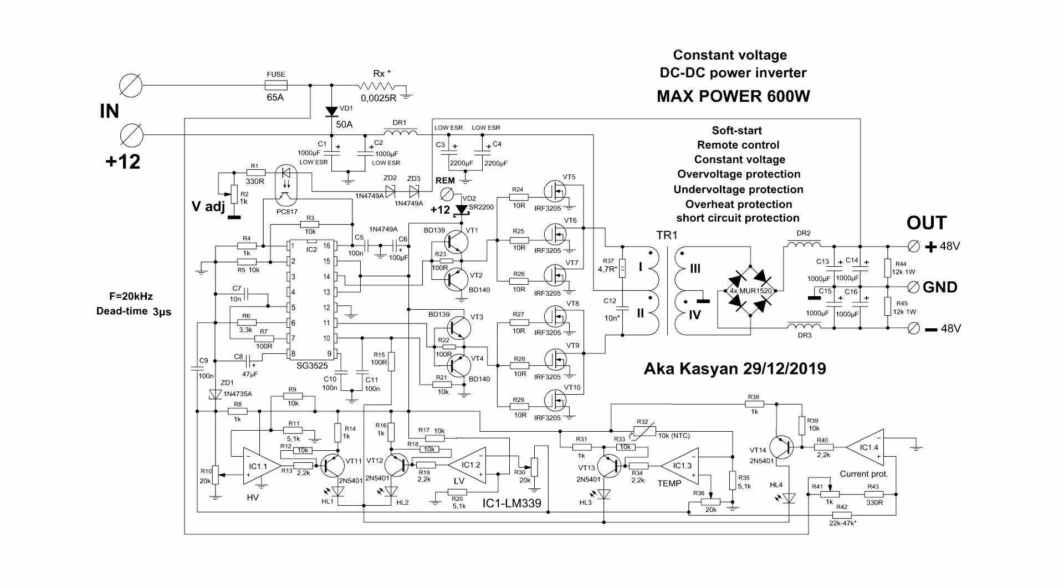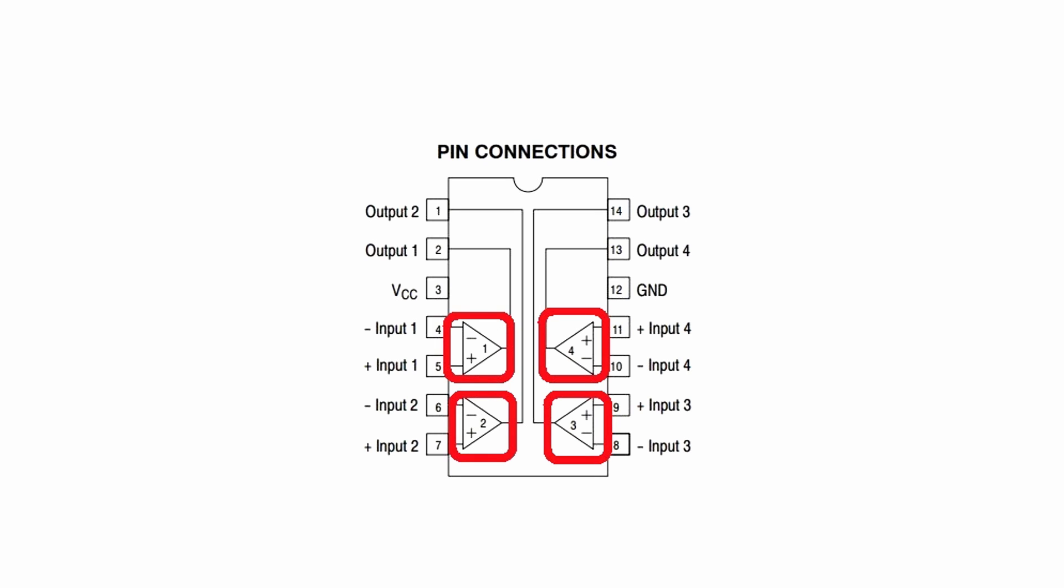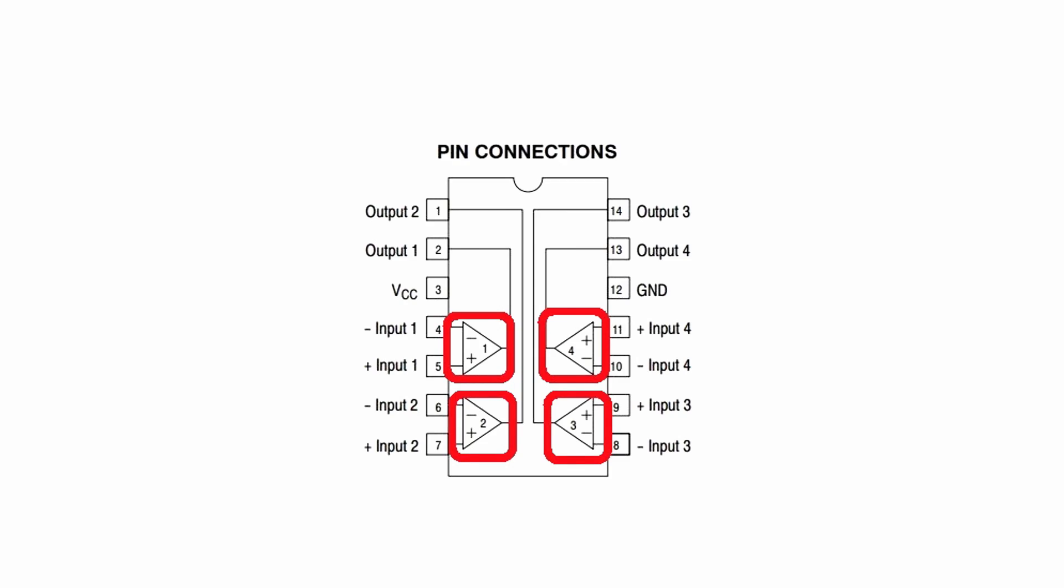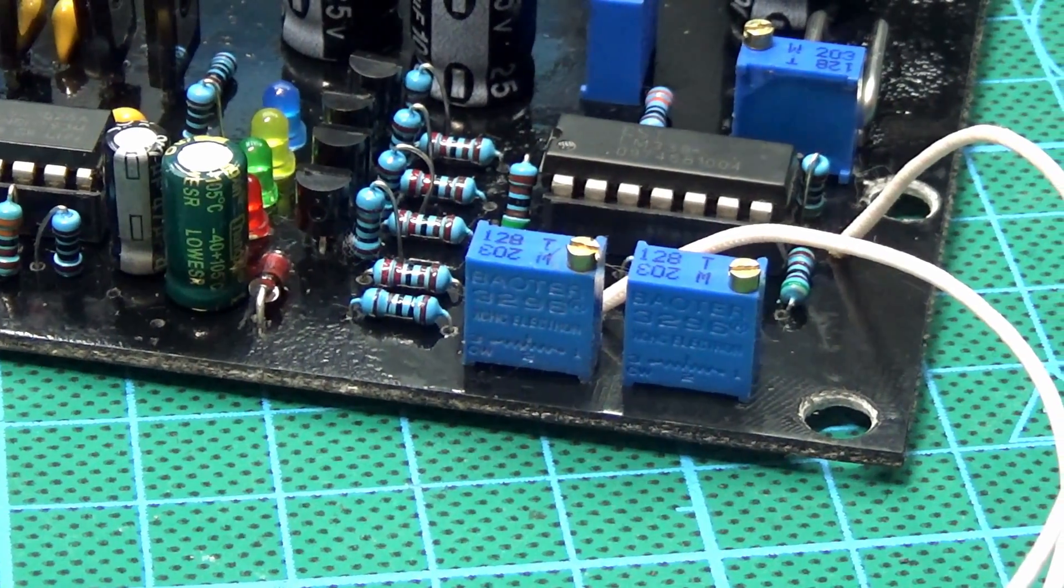As I said earlier, we have a multifunctional protection system against everything that came in my head. Against overheating, short circuits, over or under voltage. Protection is built on the basis of the comparator chip LM339. How it works I already told in detail in the specified video. I advise you to watch, the link will be in the description. The microchip has four separate comparators. We have tuning resistors that will allow to set the thresholds for the operation of all protections.